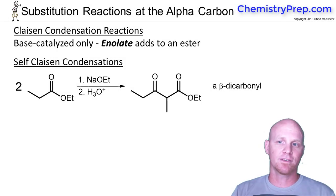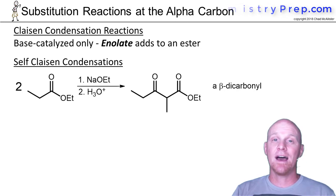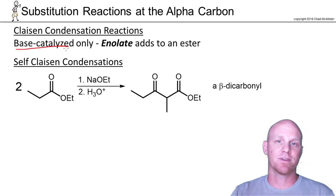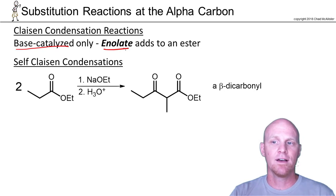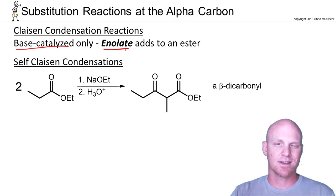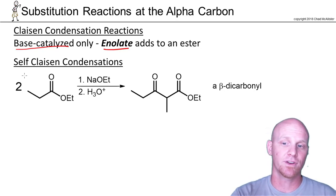Now we'll take a look at the Claisen condensation reaction. Unlike the aldol condensation, this involves esters instead of ketones or aldehydes, and it can only operate under a base-catalyzed mechanism. The acid-catalyzed mechanism is not possible here, so we're going to have an enolate as our nucleophile attacking an ester. When you attack an ester it's nucleophilic acyl substitution rather than nucleophilic addition, which actually makes the mechanism a little bit easier to follow.